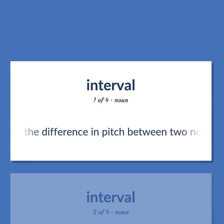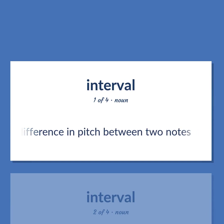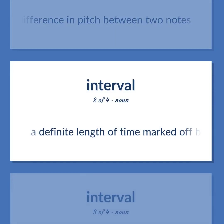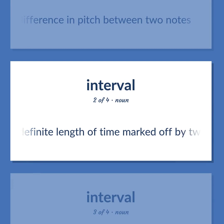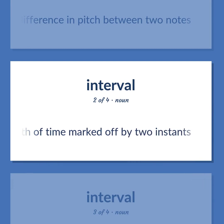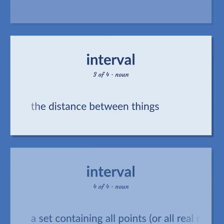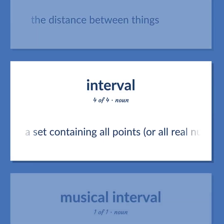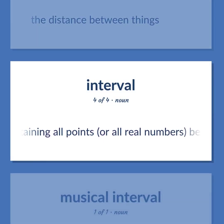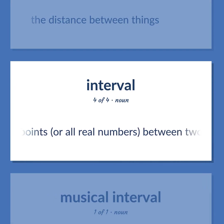Interval: The difference in pitch between two notes. A definite length of time marked off by two instants. The distance between things. A set containing all points, or all real numbers, between two given endpoints.